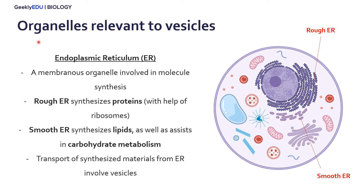There are certain organelles within our cells that are very important with regards to vesicle formation. The first is the endoplasmic reticulum, or the ER. This is a really membranous organelle — you can see here it has a lot of folds, so the membrane is quite large.